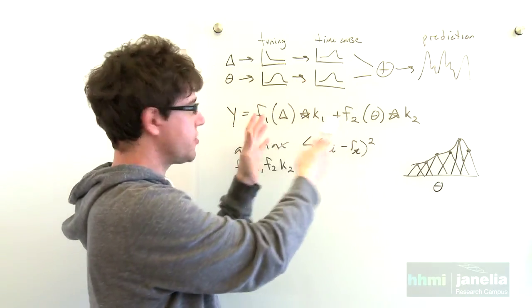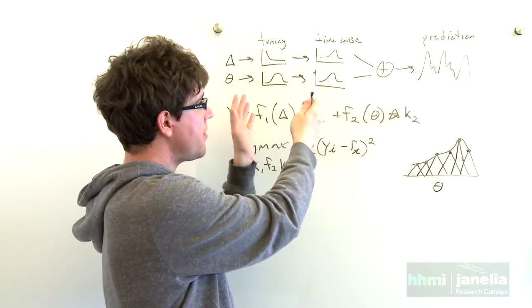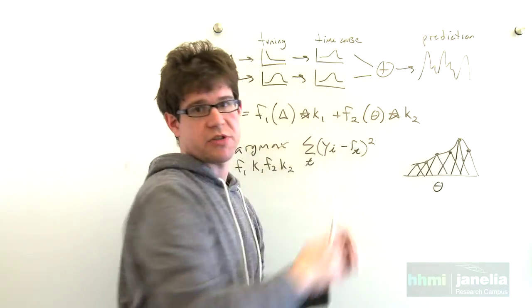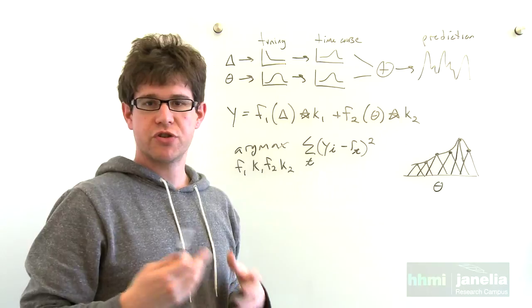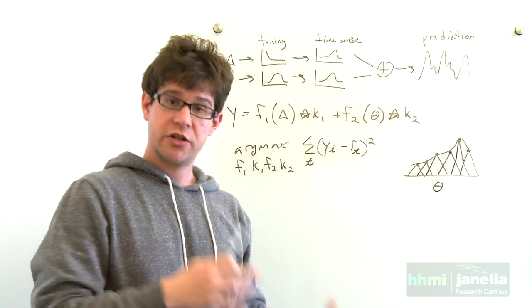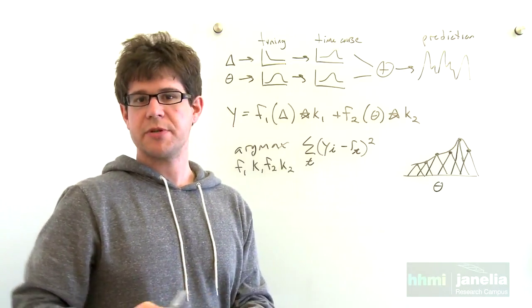And we do an optimization to find the parameters of the model that best predict the response. And we can then use the quality of the prediction as a function of these variables to describe whether neurons are involved in either touch representation or whisk representation.